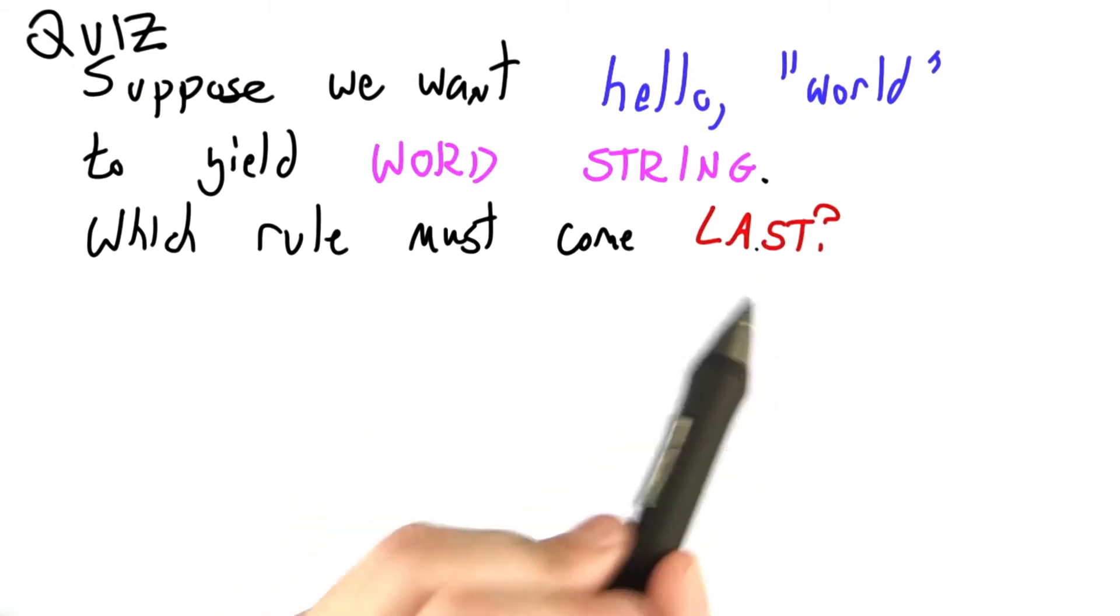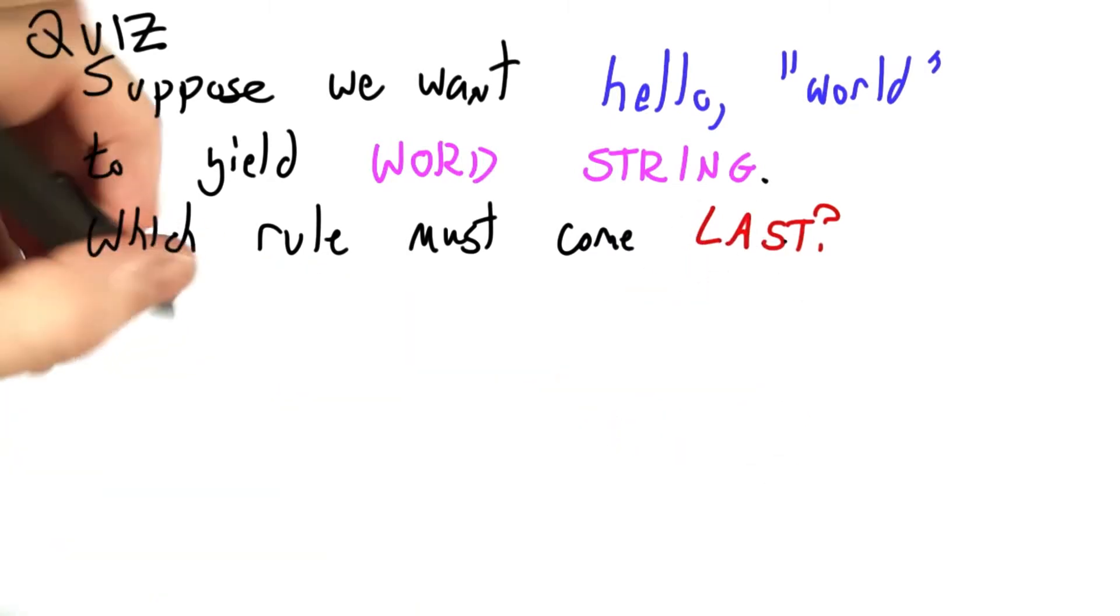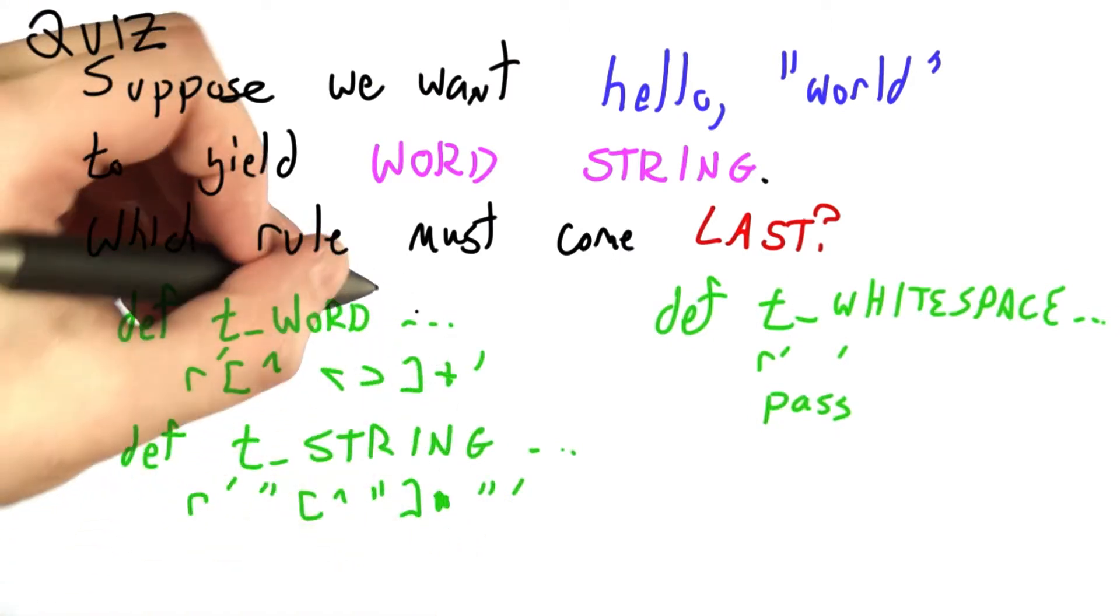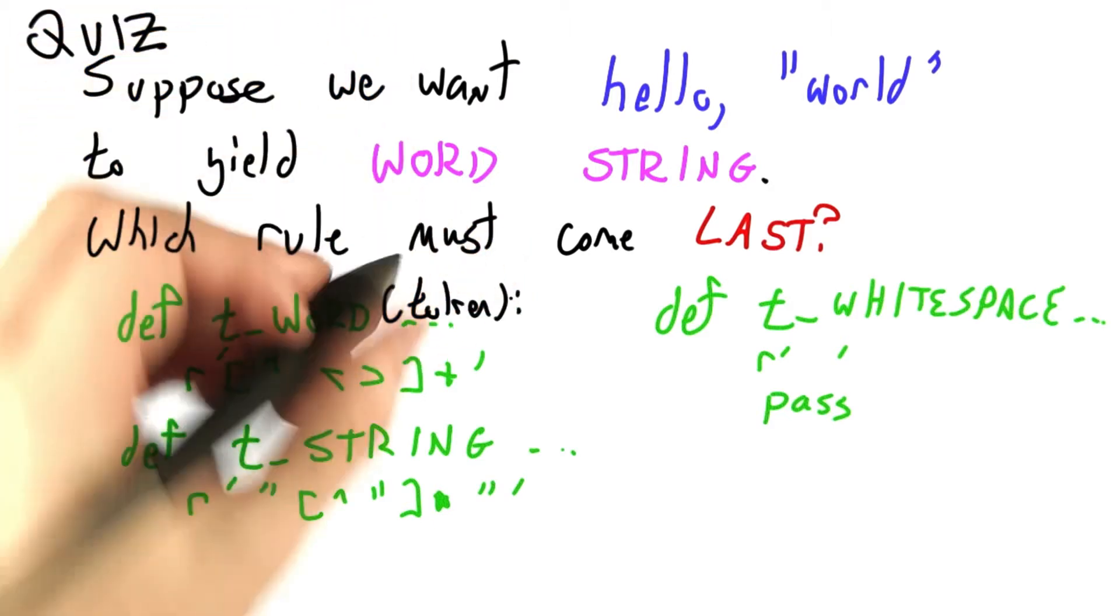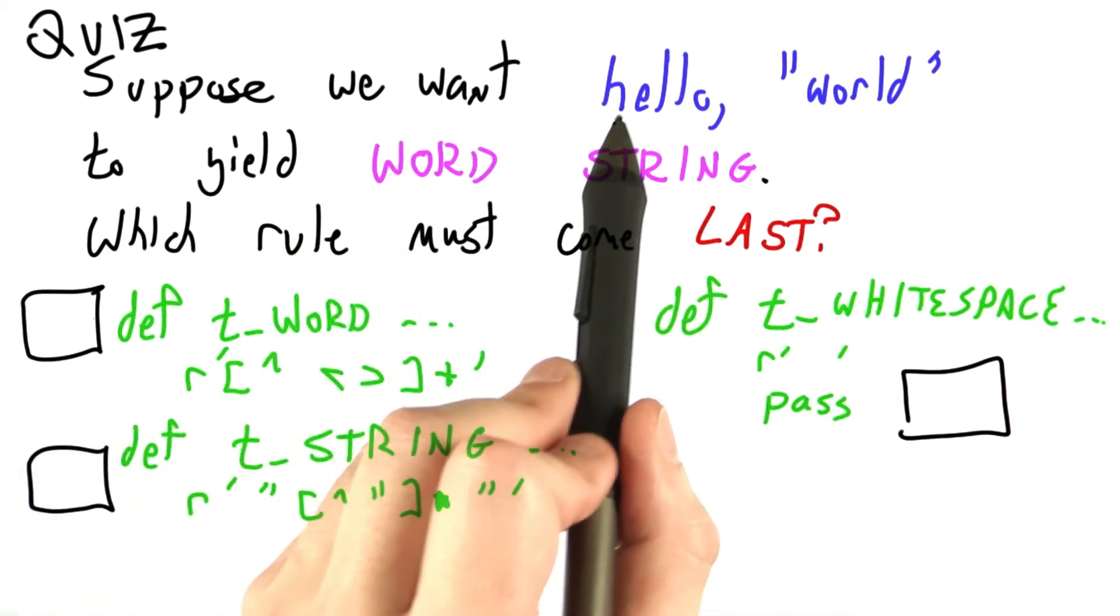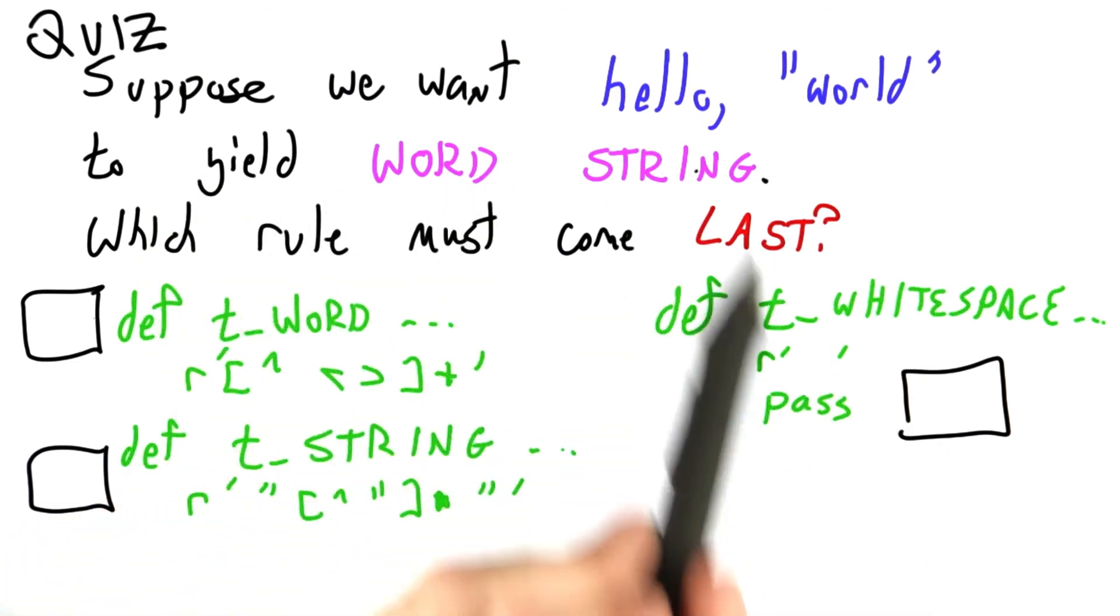I'm going to list three rules for you, and I want you to tell me which one has to come last for us to get the desired effect. And here, because you've seen it all before, I'm eliding some of the details like the colon, token, and so on. Instead, what I'd like you to do is tell me which one of these functions, which one of these rules would have to come last, bearing in mind that the one that comes first wins all ties, in order for hello comma world to break down into a word followed by a string.